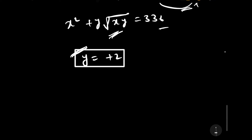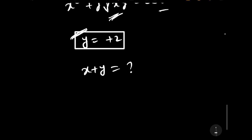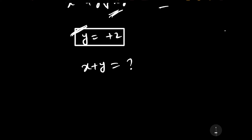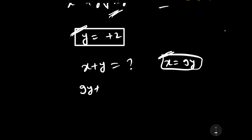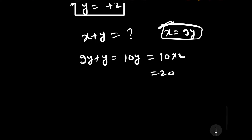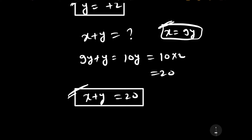We need to find x plus y. Using the relation x equals 9y, we substitute to get 9y plus y equals 10y. With y equals 2, this gives 10 times 2 equals 20. Therefore, the answer to x plus y is 20, and this is our required solution.